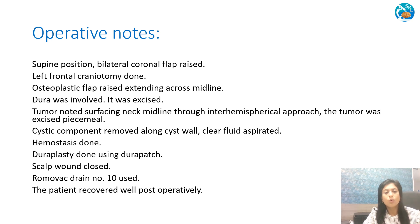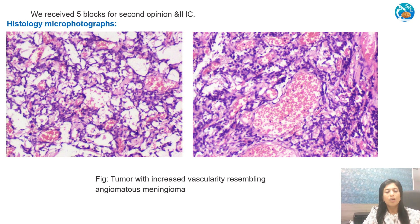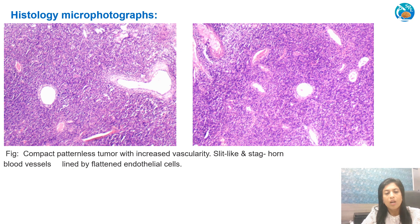These are the operative notes. Left frontal craniotomy was done. The tumour was solid-cystic and was completely excised along with the cyst wall; the patient recovered well post-operatively. We received five blocks for second opinion and immunohistochemistry. The histology slide revealed a tumour with increased vascularity resembling angiomatous meningioma. The tumour was compact, patternless, with increased vascularity; the blood vessels were slit-like with staghorn appearance and were lined by flattened endothelial cells.